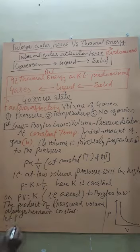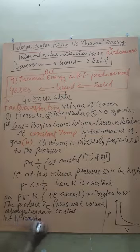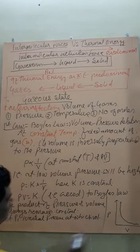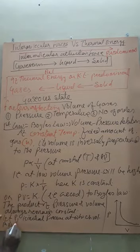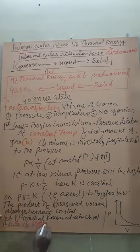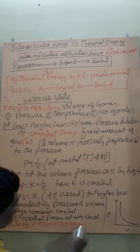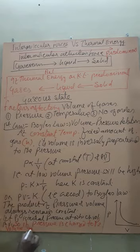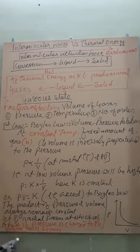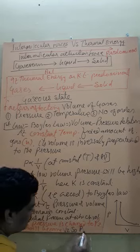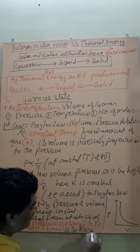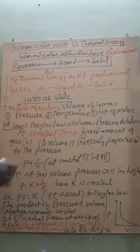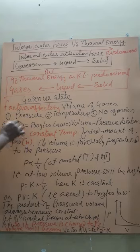Let P1 be the initial pressure at which the volume V1 is given. If pressure is changed to P2, the volume will become V2. So P1V1 will equal P2V2, and will always equal K, that is constant — it always remains constant. This is about Boyle's law.